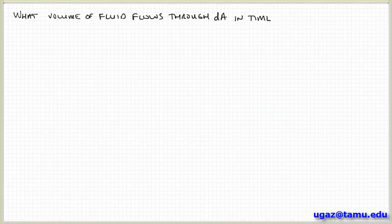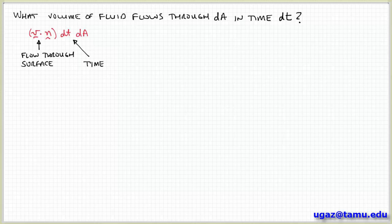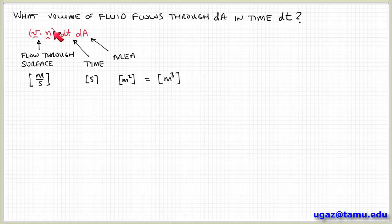Question number one: what is the volume of fluid that flows through area element dA in some time interval dt? I can express that as the projection of velocity normal to the surface, v dot n, times the time increment dt, times dA. Here v dot n represents flow through the surface, dt is the time interval, and dA is the area of the differential element. Checking units: velocity is meters per second, n is unitless, time is seconds, and area is length squared — seconds cancel and we get units of length cubed, or meters cubed, which are units of volume.